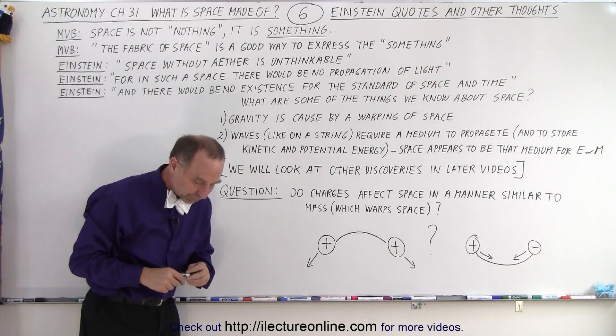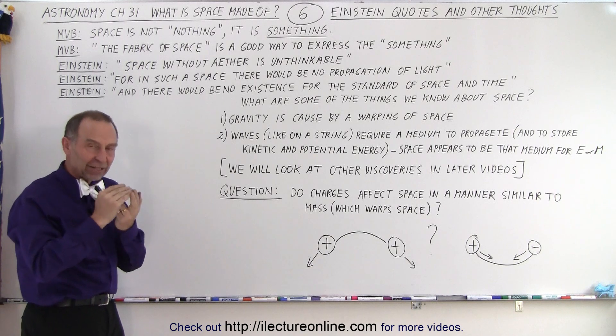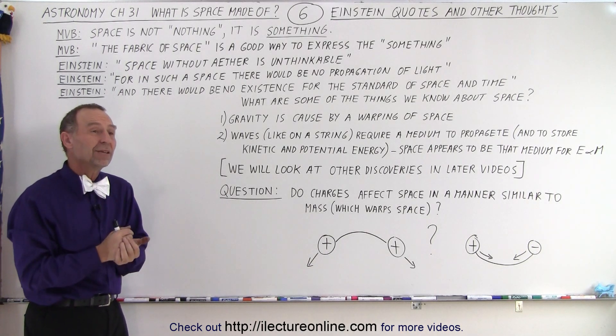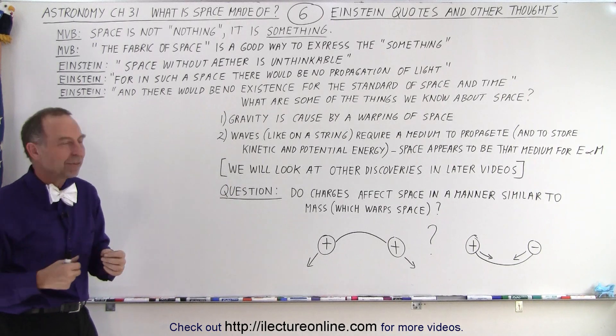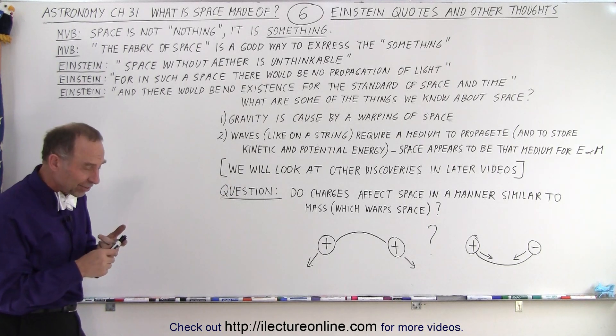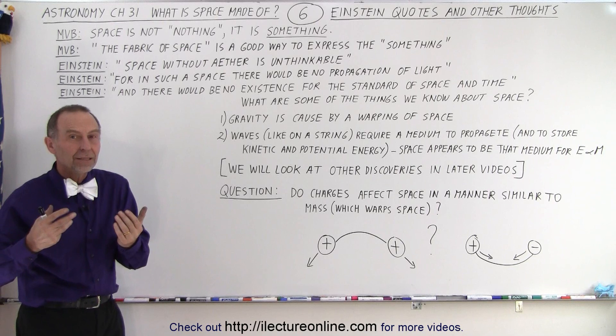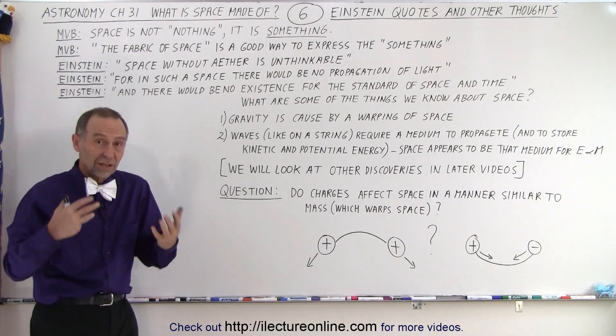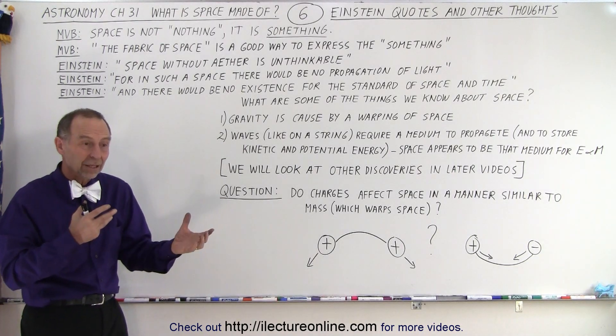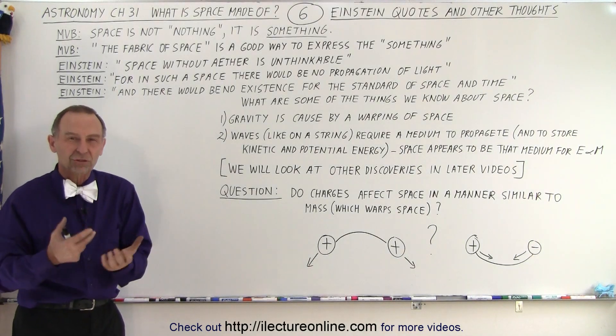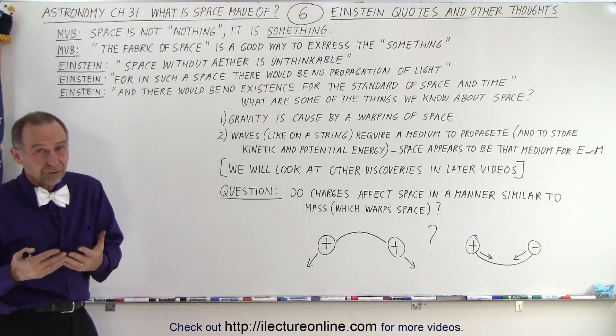Einstein believed that space had to have some property that affected time, that affected the ability for electromagnetic radiation to travel through space, and he realized that the presence of mass warped space in such a way to cause the forces of gravity that we can measure. He also realized that time is not an absolute, that time goes forward at different rates depending upon the amount of the gravitational force. In strong gravitational fields time was slower, in less strong gravitational fields time was faster. So the properties, the qualities of space affect the progression of time as well.